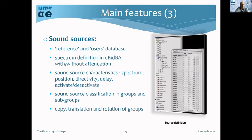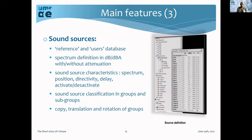Regarding sound sources, you can create punctual sound sources, each defined by its spectrum. You can create several kinds of spectra and define properties such as directivity, delay, and position. You can organize all your sound sources in groups or subgroups to organize your project. You can manipulate sound sources by group — copy a group to another group, copy a source from one group to another, translate a group of sound sources, or rotate sources. This facilitates the management of sound sources within the project.